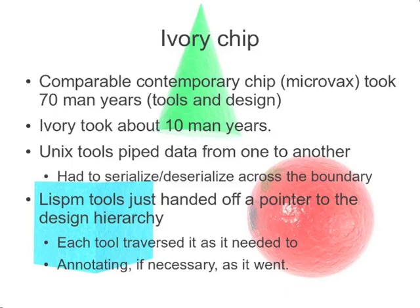Another point: using Unix tools, you'd take some internal structure and thread it through the needle of piping it out to an 8-bit stream to pass to another tool, which would then reconstruct a data structure and operate on that. Whereas on the Lisp machine, we just handed a pointer to the data structure and each tool traversed it the way it wanted to and made annotations wherever it wanted to.